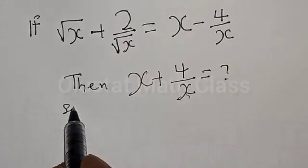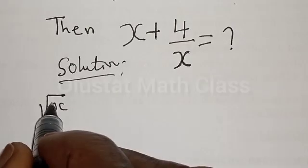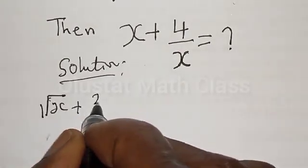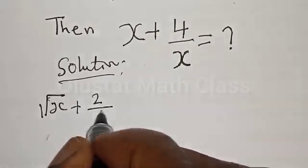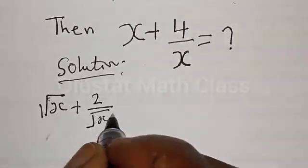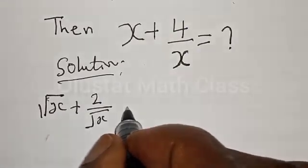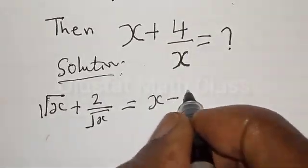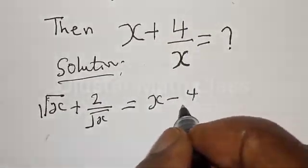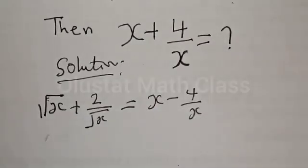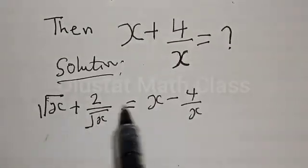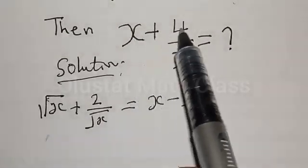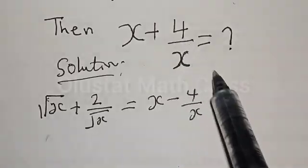Solution. We have square root of s plus 2 divided by square root of s equal to x minus 4 over x. We want to look at how we can factorize this in order to get the value of s plus 4 divided by x.